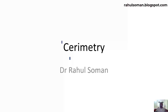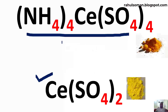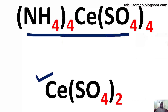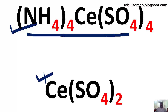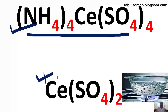Here we are using various ceric salts — for example, ceric ammonium sulfate, cerium(IV) sulfate, or ceric sulfate — as the oxidizing agents. We prefer ceric ammonium sulfate over cerium sulfate. The reason is that ceric ammonium sulfate is very much water-soluble in nature, so we can dissolve it relatively easily without much boiling. If we use ceric sulfate, we have to heat or boil it for some time.